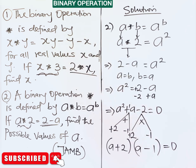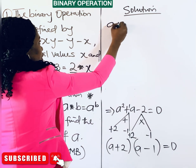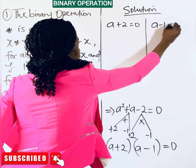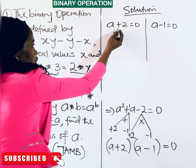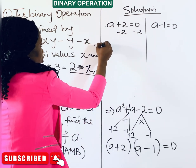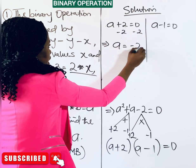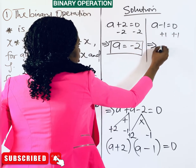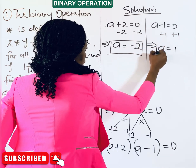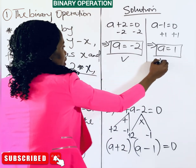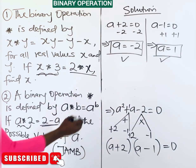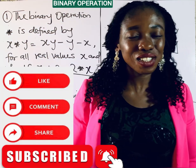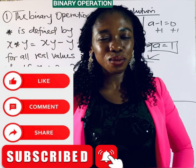Setting each factor to zero: a plus 2 equals 0 gives a equals negative 2; and a minus 1 equals 0 gives a equals 1. So the two possible values of a are negative 2 and 1, as required by the question.